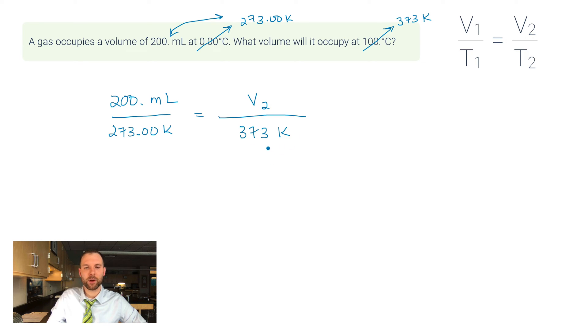Now at this point, what we want to do is cross multiply. I want to multiply 200 by 373, and then I'm going to divide by 273. So here I go: 373 divided by 273, and I get that V2 is equal to 273, ironically, 273 milliliters. So that's my new volume there.